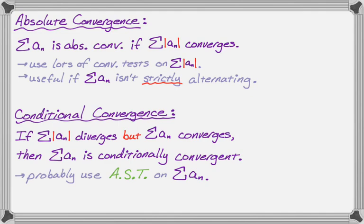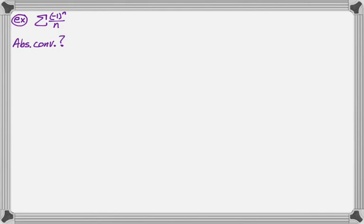So let's look at two examples. The first example is the sum of negative one to the n over n. First thing we're going to do is check if it's absolutely convergent. So we rewrite the series taking the absolute value of the nth term — now it's the sum of one over n. But we know that that's the harmonic series, so that definitely diverges.